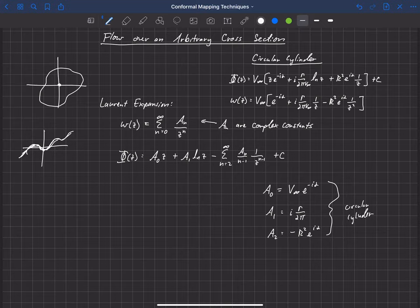And it's simply the Laurent series expansion where the rest of the terms, so a_n equals zero for n greater than 2. So if we set the rest of those terms to zero, we get a circular cylinder. If we have a more complex geometry, then we would have higher order terms now that are non-zero.